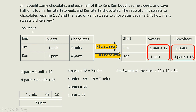The question asks for the number of sweets Ken bought. I find Jim's sweets at the start, which is 1 unit plus 12, so 22 plus 12 equals 34. Keep in mind that this 34 came from Ken, because Ken gave half to Jim. So to find the number of sweets Ken bought, you take 34 times 2, which equals 68 sweets.